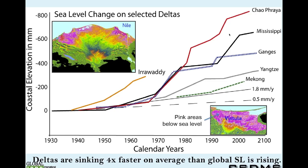If you look at the deltas where 500-plus million people are living, they're sinking much faster than sea level is rising. On average, if you took all the large temperate, subtropical, and tropical deltas where people live, they're sinking four times faster than global sea level is rising. You get pictures like these two deltas where the pink areas are below sea level, protected from the ocean by natural or human-constructed barriers. Tide gauges can tell you something interesting is happening, but it's one spot in a very large system.